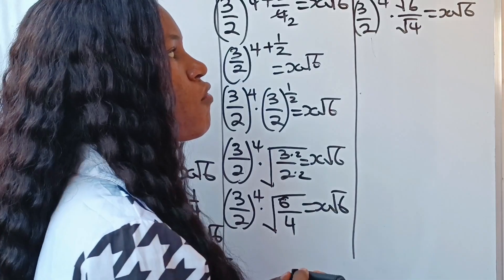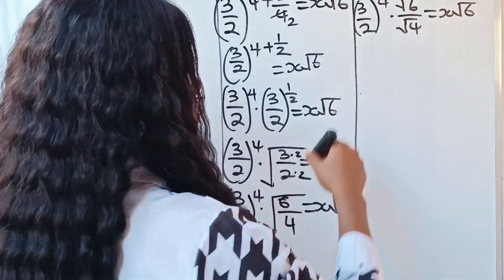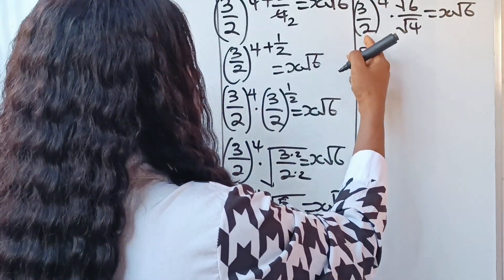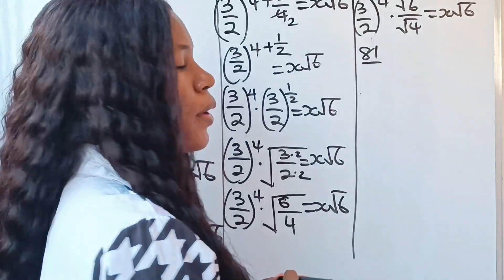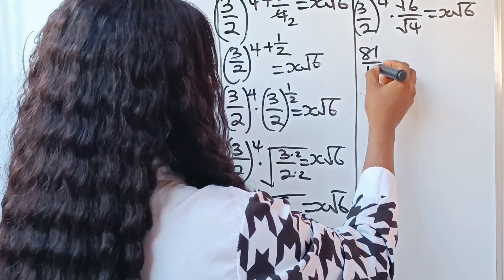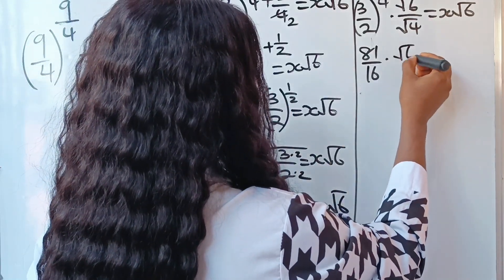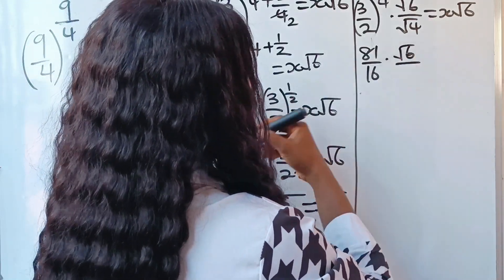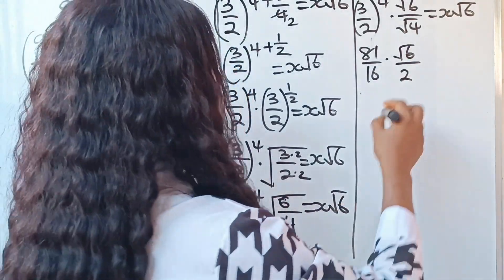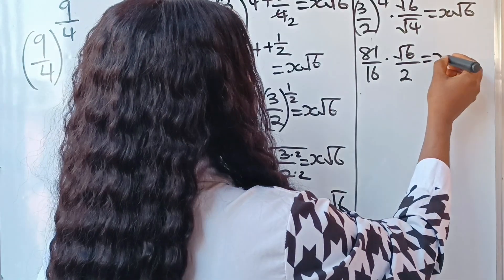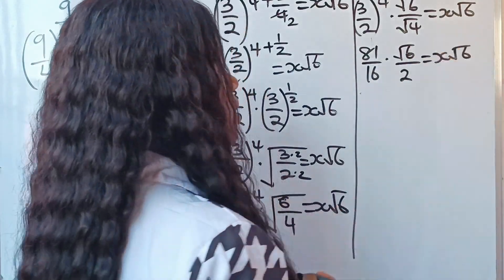Now, 3 to the power of 4 gives us 81, and 2 to the power of 4 gives us 16. The square root of 4 is 2. So we have 81/16 times root 6 over 2, equal to x root 6.